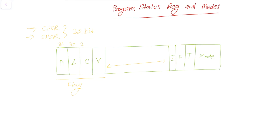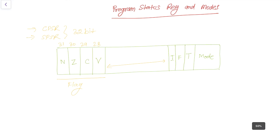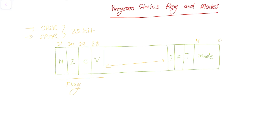Bit 31 is the 31st bit, 30th, 29th, and 28th bits are flag bits. The mode field goes from bit 0 to bit 4. Then there is a fifth bit — actually the sixth bit — that says whether the processor is running in thumb mode or not. Then there is a seventh bit, and the eighth bit tells whether the processor is running in interrupt mask or not. So bits 6 and 7 tell the processor what is the interrupt mask and interrupt mode.